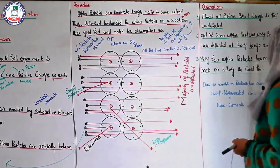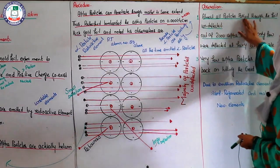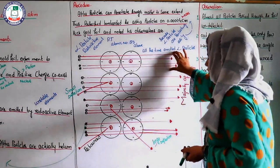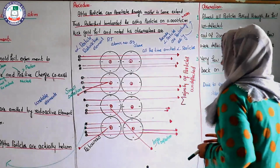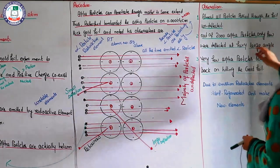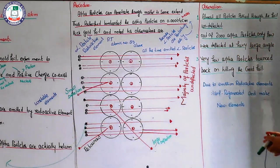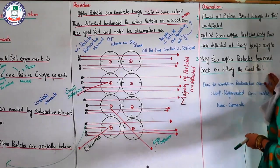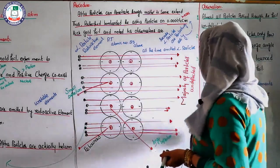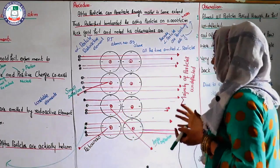There are some observations about the Rutherford experiment. Almost all the particles passed through the foil undeflected. Out of 20,000 alpha particles, only a few were deflected at fairly large angles — some showing small deflection, some large deflection, and some rebounding. Very few alpha particles bounced back after hitting the gold foil — very few collided with the nucleus or gold foil and rebounded.